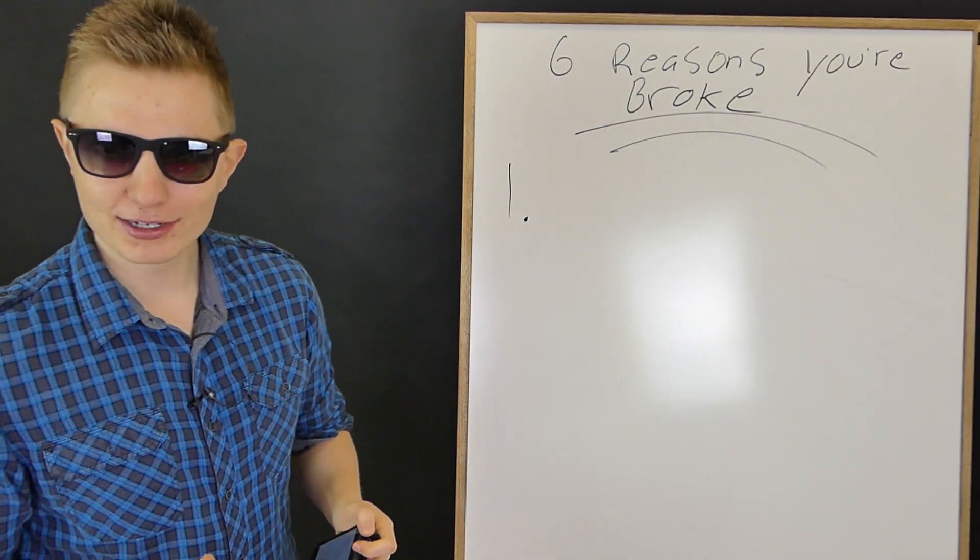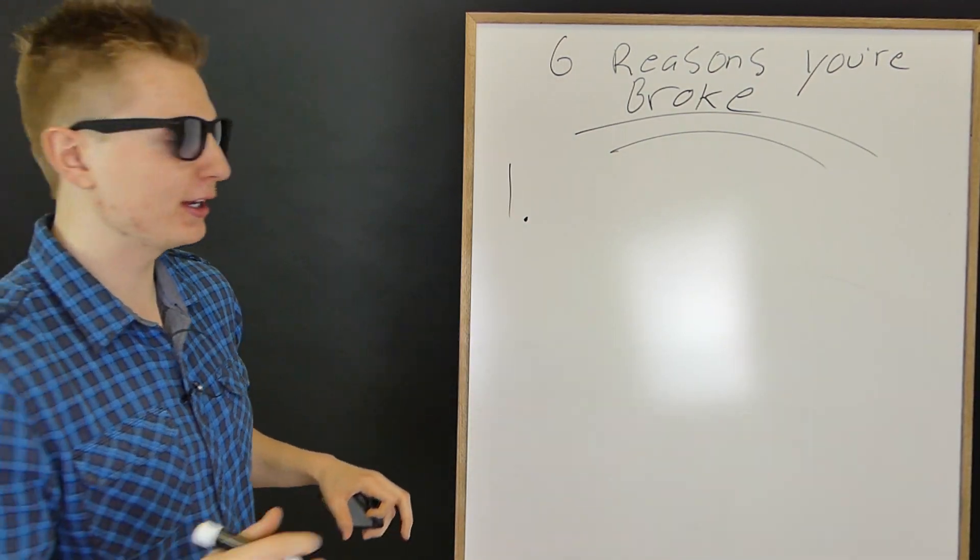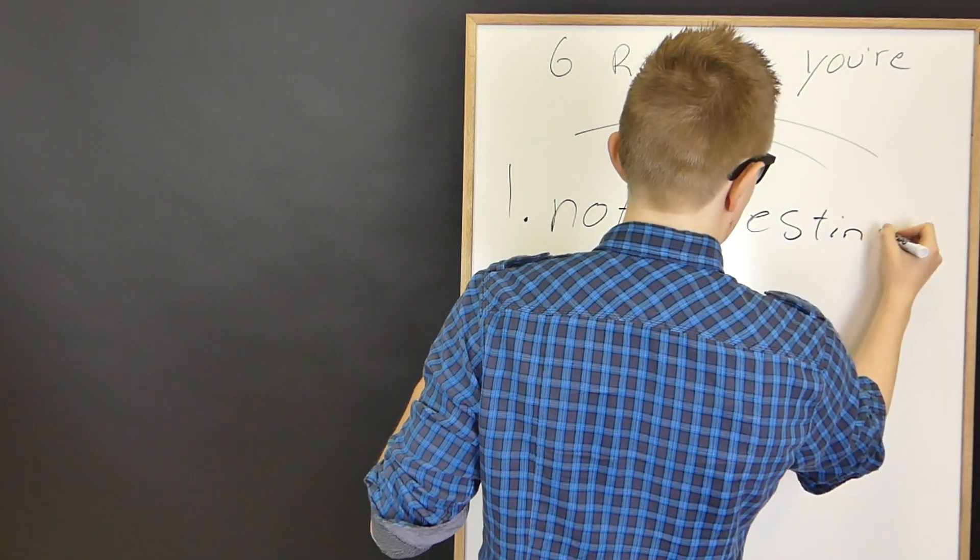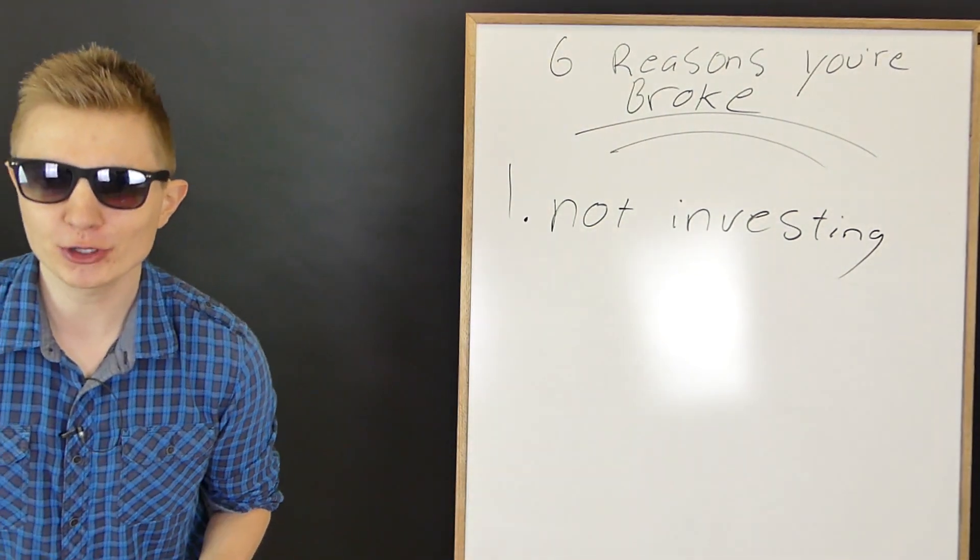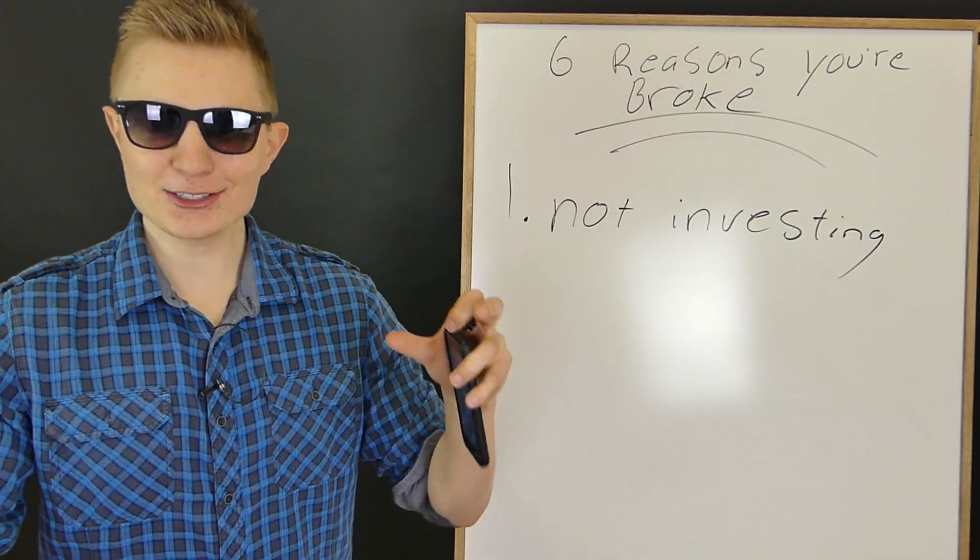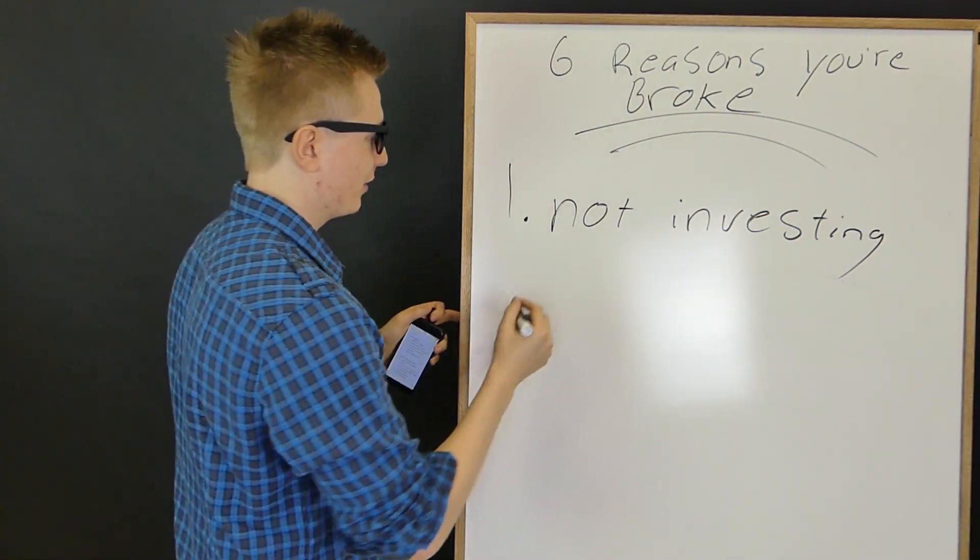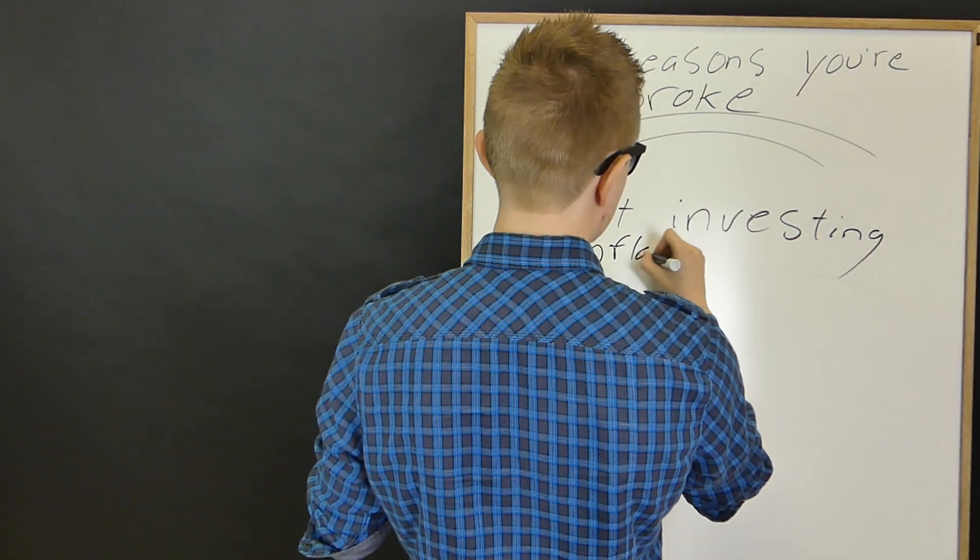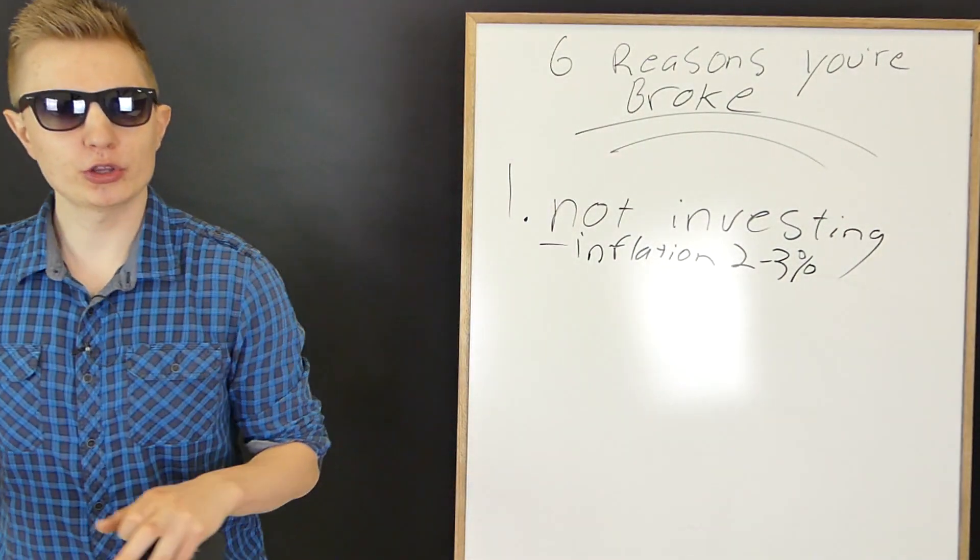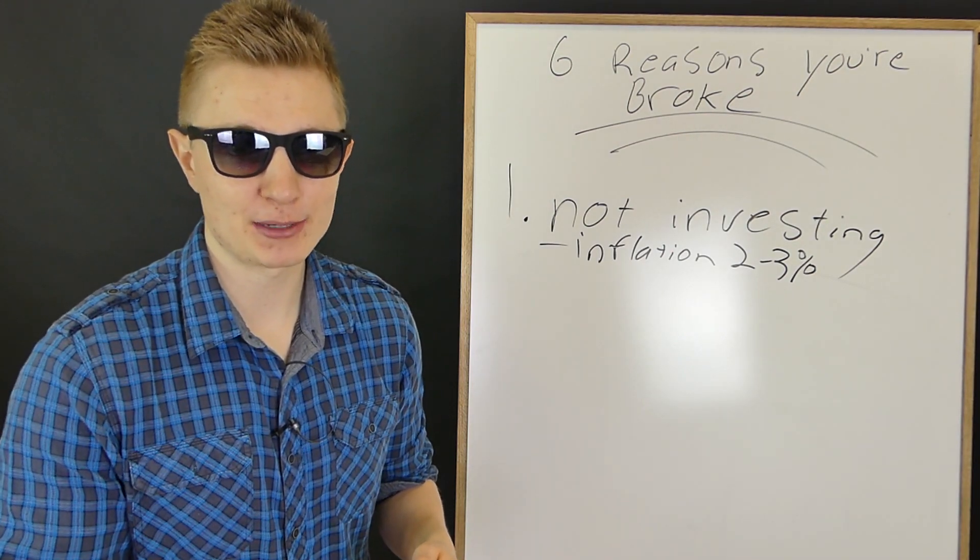So we have six reasons why you're broke, or if you do these six things, you will probably go broke or are broke right now. We're going to talk about number one here. Number one, this is why people are broke when they're old. And I hate this so much because everyone has the opportunity to do this and it is not investing. This is a really simple one, but it's something that people don't do. And it frustrates the hell out of me, especially young people who don't invest. So let's break this down here. Inflation, if you guys don't know what inflation is, it means that the cost of goods goes up two to three percent every single year.